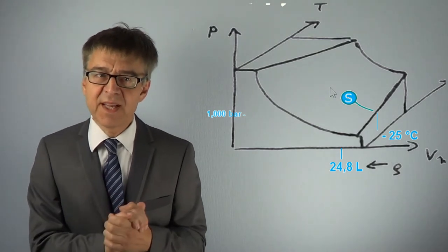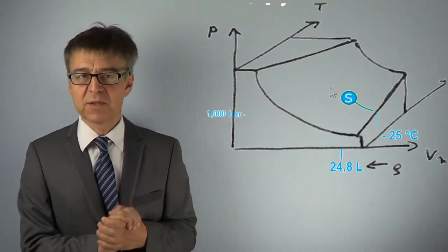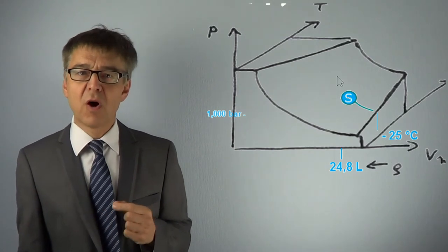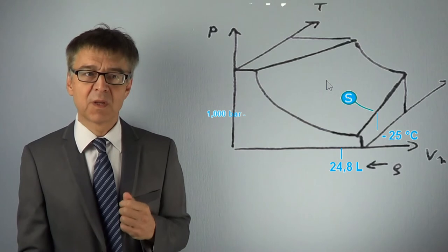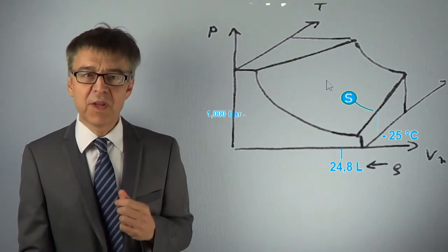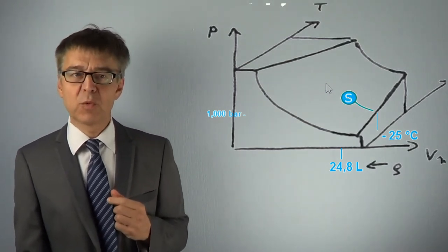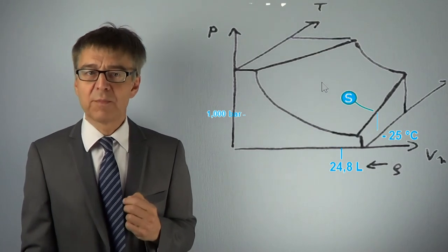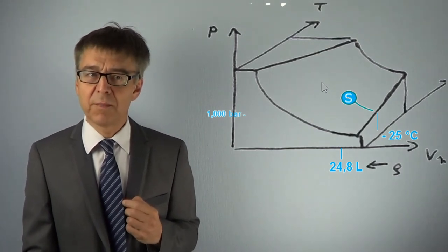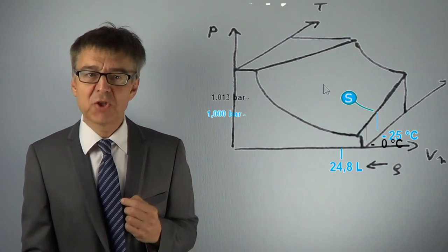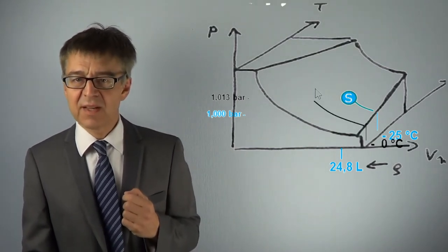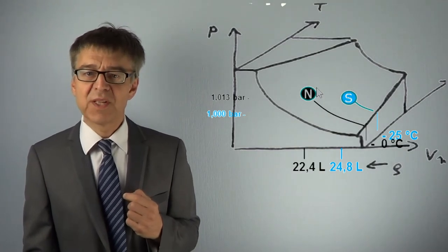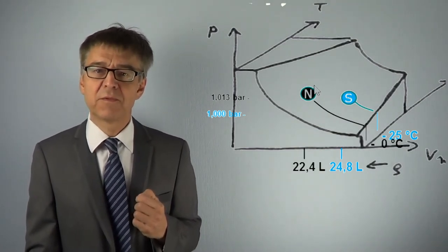DIN standard 3043 defines the so-called normal condition or normal state to 0 degrees Celsius and 1 atmosphere, 1.013 bar. Under the normal conditions, the molar volume of an ideal gas is slightly lower than under the standard conditions, about 22.4 liters.